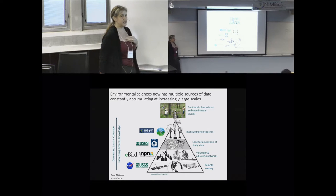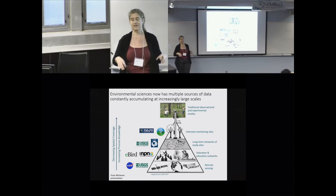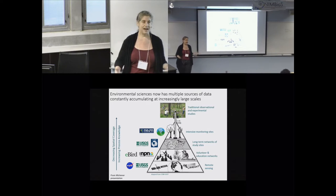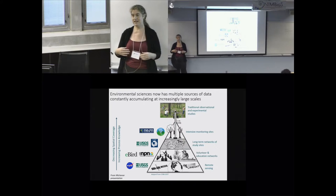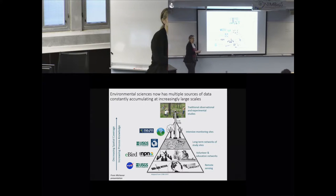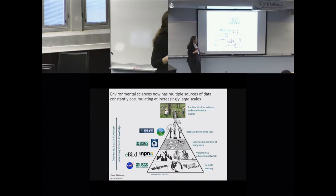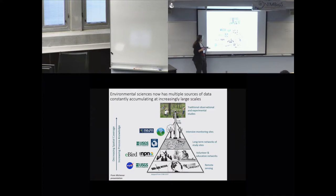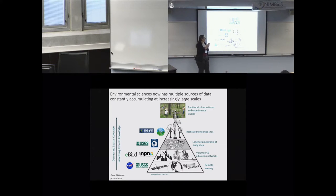I was trained as a traditional ecologist and thought of data in terms of data sets — you go out and collect a data set. Now I think about data in terms of data streams, constantly coming in to help us understand the ecological world. There's a kind of pyramid: at the bottom, remote sensing gives us the greatest spatial coverage but the least process knowledge, and as we move up, we get less spatial coverage but more insight into mechanisms and processes.